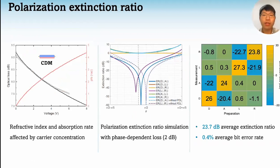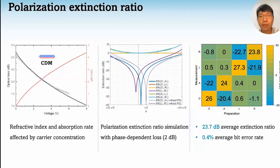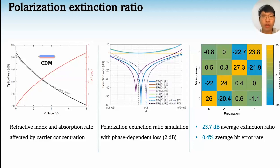However, the reverse voltage applied to the high-speed carrier depletion modulator causes the change of carrier concentration. This will change the refractive index and absorption rate at the same time, which causes unwanted phase-dependent loss, and this will decrease the fidelity of the generated polarization states. In order to generate polarization states with high extinction ratio, we simulate the effect of phase-dependent loss on the polarization states as a guide for the experiment, and then we carefully tune the bias and driving amplitude of the two modulators on our chip to achieve and optimize performance of the transmitter. In the end, we obtain an average extinction ratio of 23.7 dB and a QBER of 0.4%.